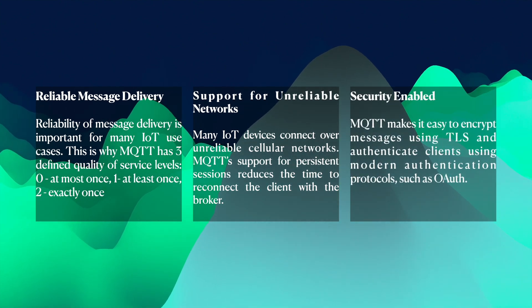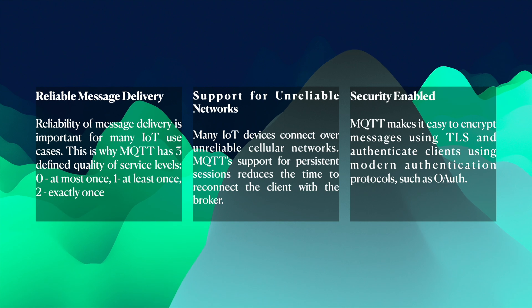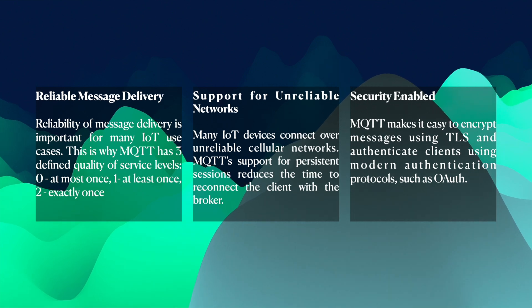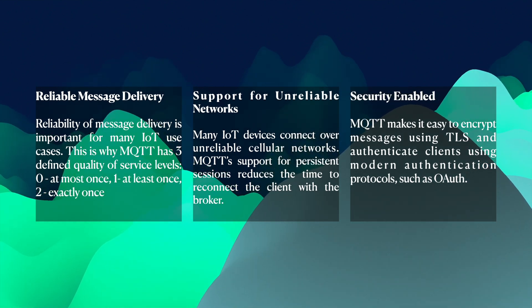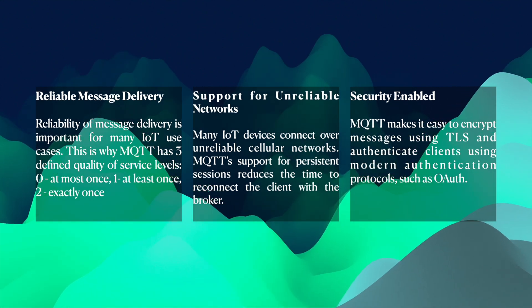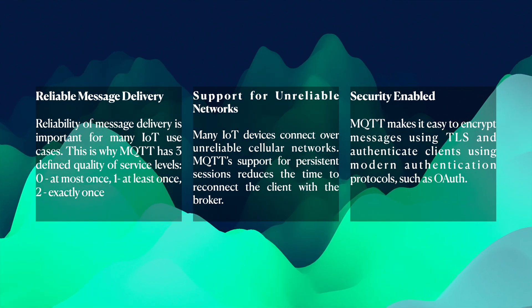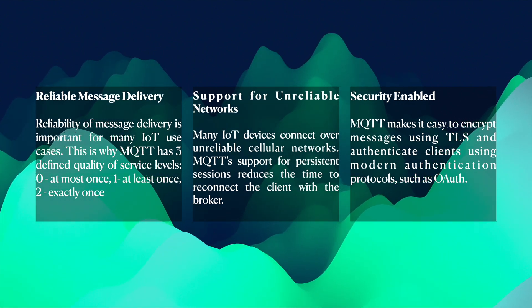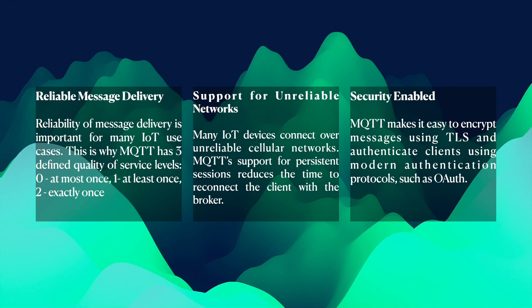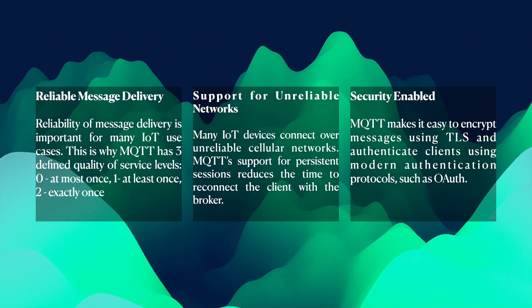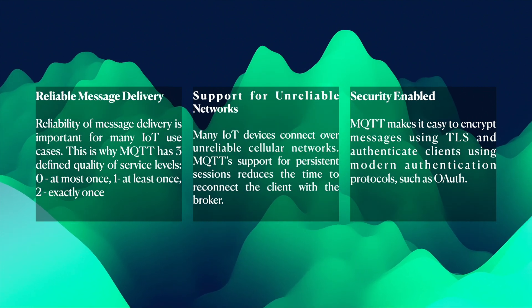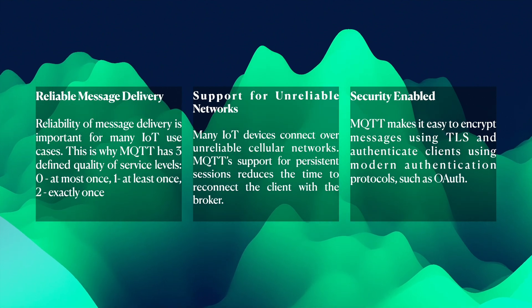Next is security. MQTT has added security features, which is the most important requirement in IoT. MQTT makes it easy to encrypt messages using TLS and authenticate clients using modern authentication protocols such as OAuth, which is a two-step verification process. This is how we make our IoT devices safe. These are the reasons why we opt for MQTT over any other protocol.